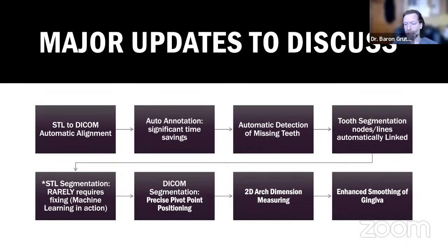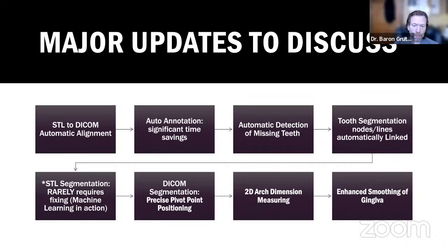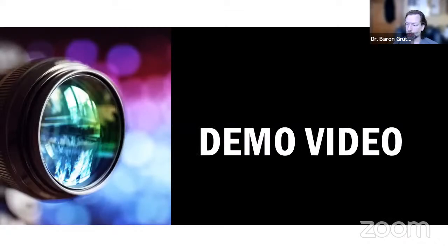STL segmentation has greatly improved through machine learning — it so rarely needs any fixing now. The big new feature is DICOM segmentation, which automatically segments out each individual tooth and its root. This enables precise pivot point positioning, which is critical to treatment outcomes. We also have 2D arch dimension measuring, which is now much more accessible, and enhanced gingival smoothing so that jagged soft tissue edges from large tooth movements no longer complicate printing.